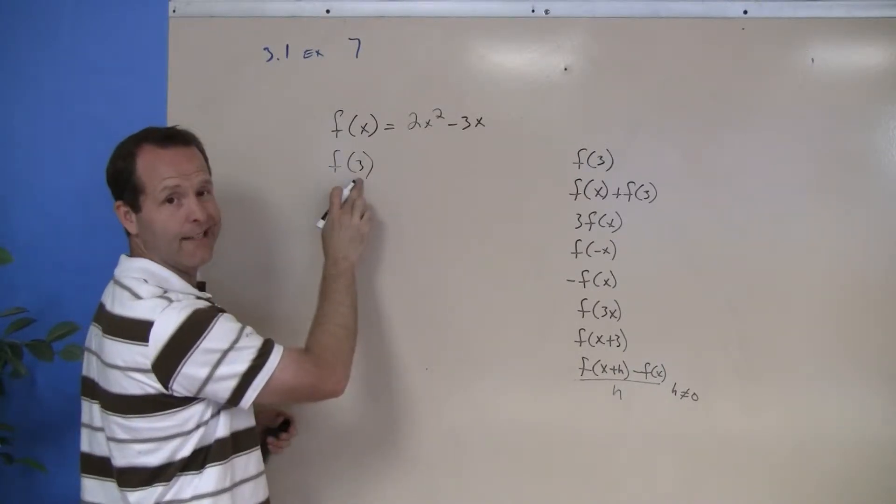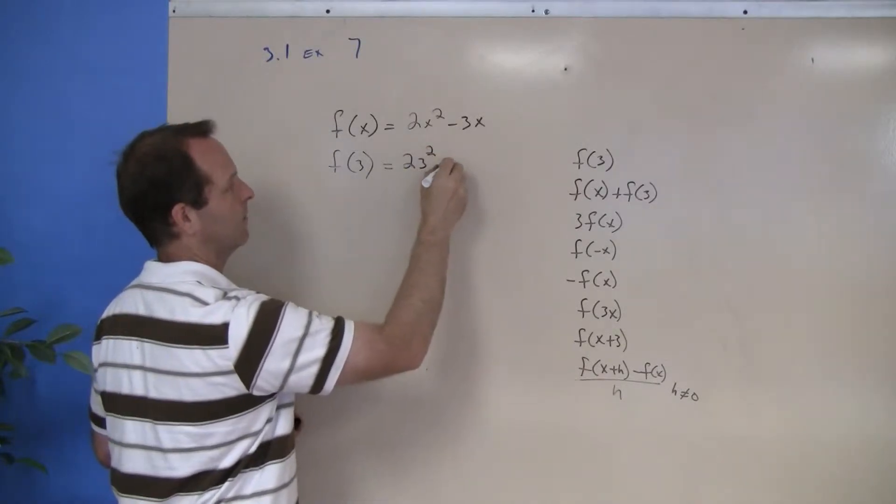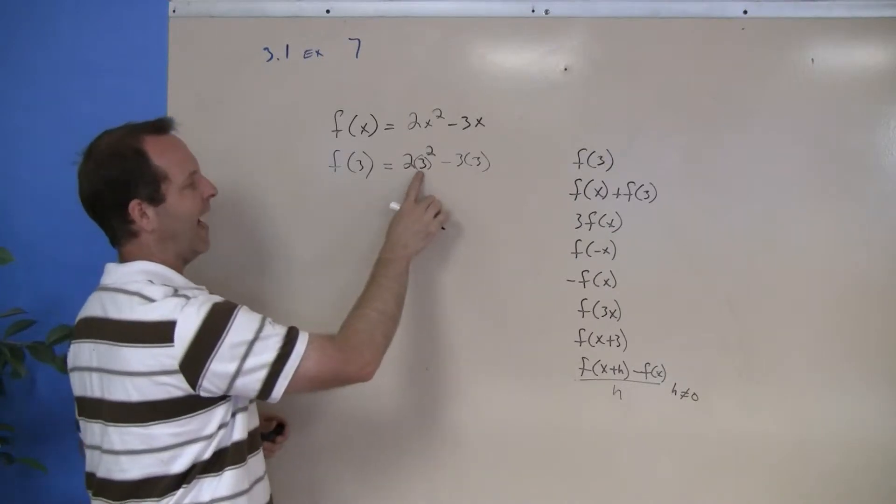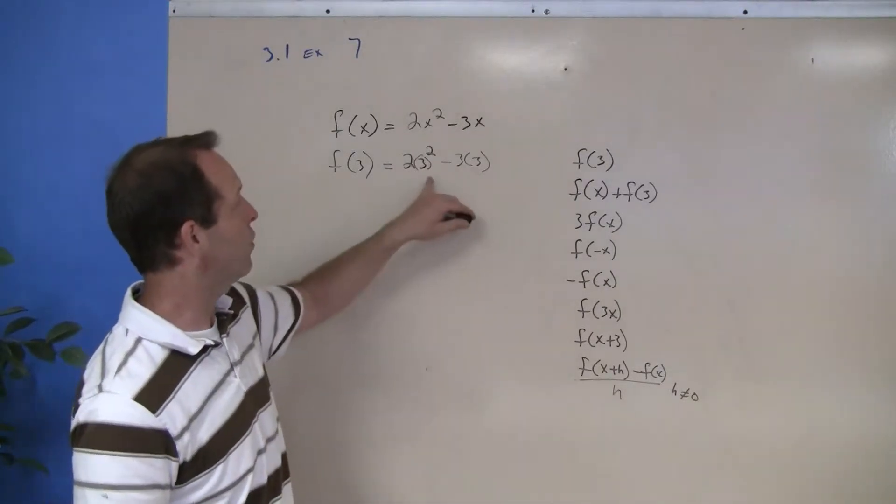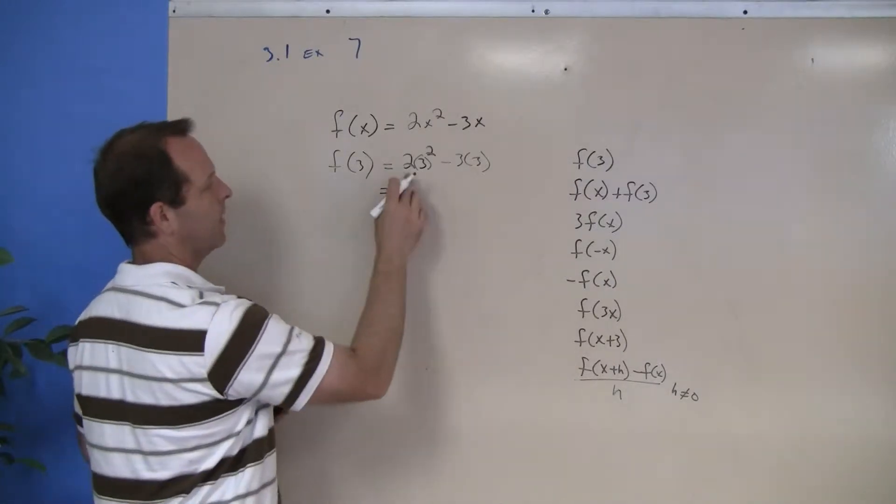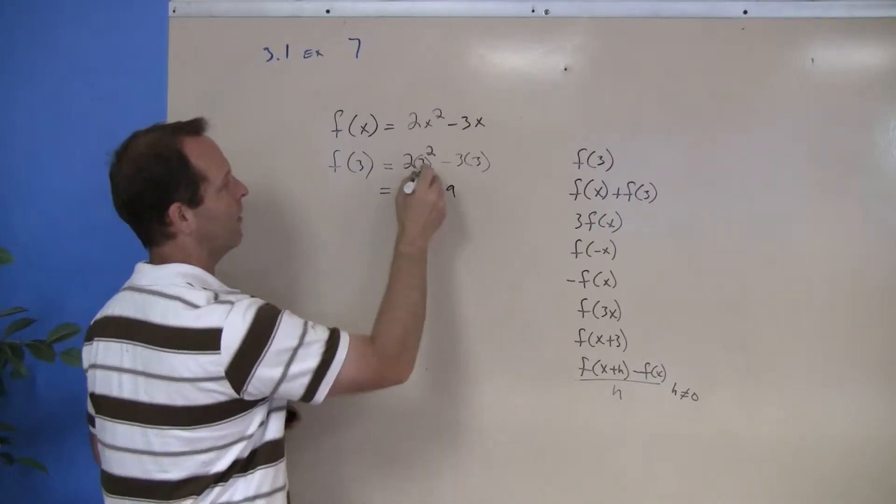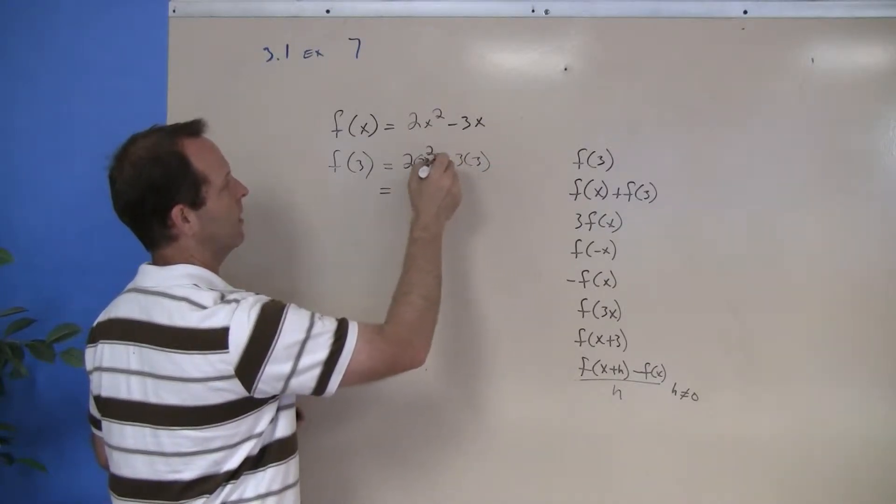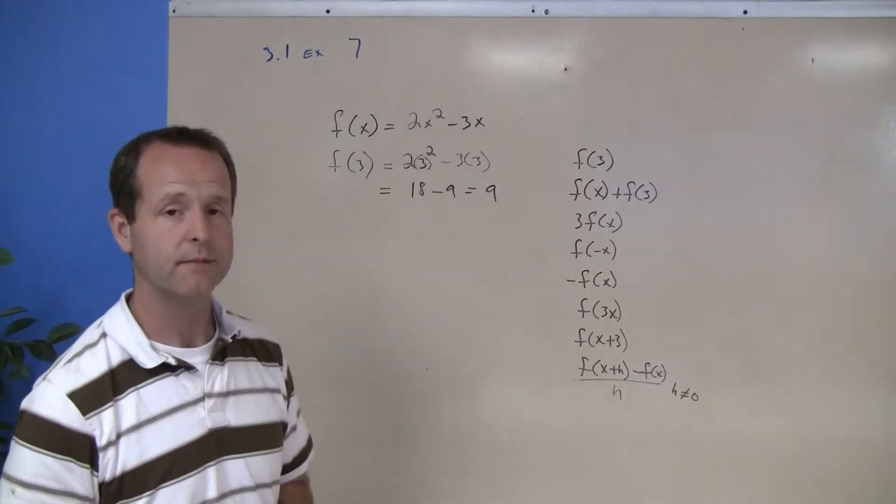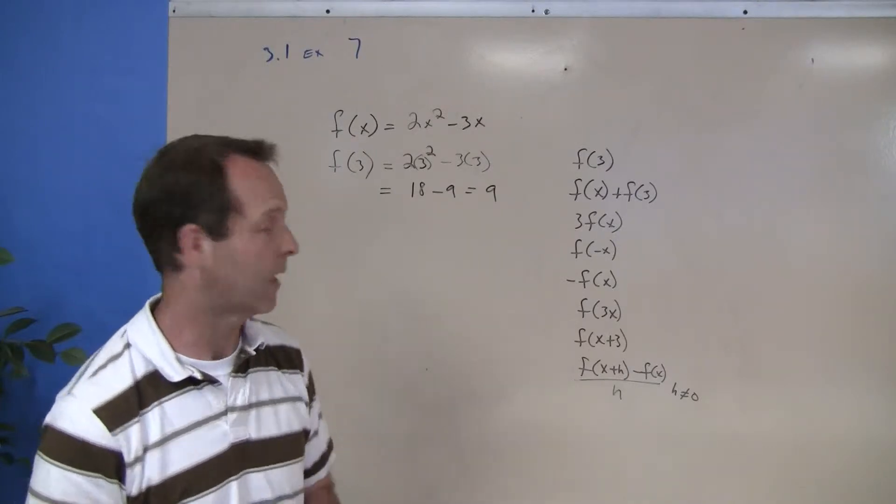So everywhere I see an x, I insert a 3. Now I'm going to get into a habit of putting parenthesis around those 3's in that second part of the equation. 2 times 3 squared is 18, 18 minus 9 equals 9. So my function evaluated at 3 is 9, or f(3) equals 9.